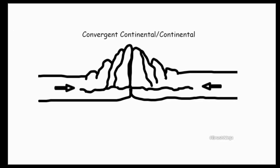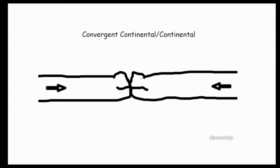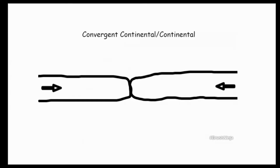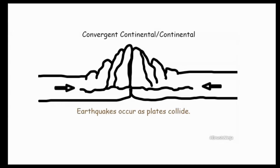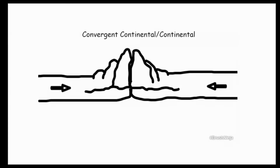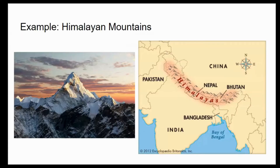Here we have an animation of this exact thing happening. We have the two plates, continents pushing together, and we then have those mountain ranges forming as they push each other up. Earthquakes also occur as they collide. A common example of this is the Himalayan mountains in Asia. We have two plates that are coming together and pushing each other up to form really tall mountains known as the Himalayan mountains.